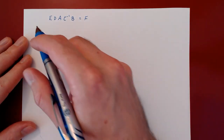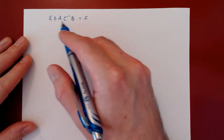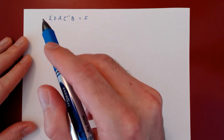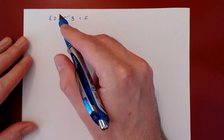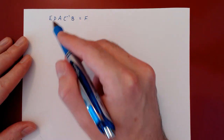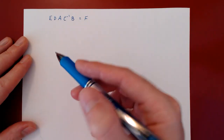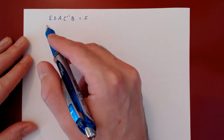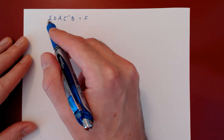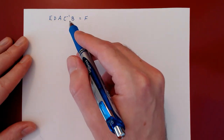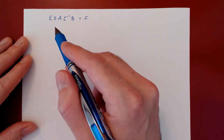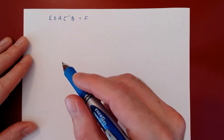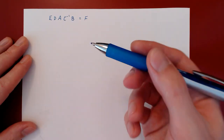Imagine that the following matrices are all invertible matrices of the same size, and the objective is to isolate matrix A. To isolate matrix A from this equality, we have to cancel matrices ED from the left and C inverse B from the right. To cancel a matrix, this can be accomplished by multiplying by its corresponding inverse.